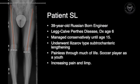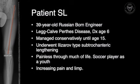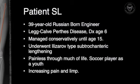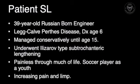This is a 39-year-old male. He's a very active, athletic gentleman who was born in Russia and had a diagnosis of Legg-Calvé-Perthes disease at age six. Here you see the AP radiograph of him as a child. He was managed conservatively until age 15, at which point he underwent an Ilizarov-type leg lengthening procedure, presumably to manage a leg length discrepancy as a consequence of his Perthes disease.